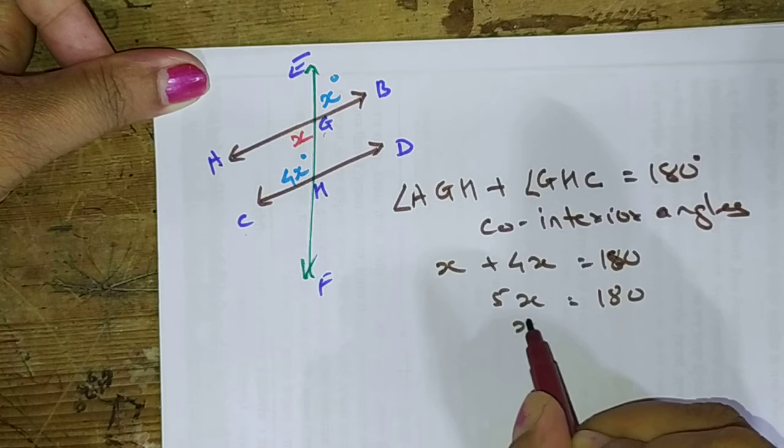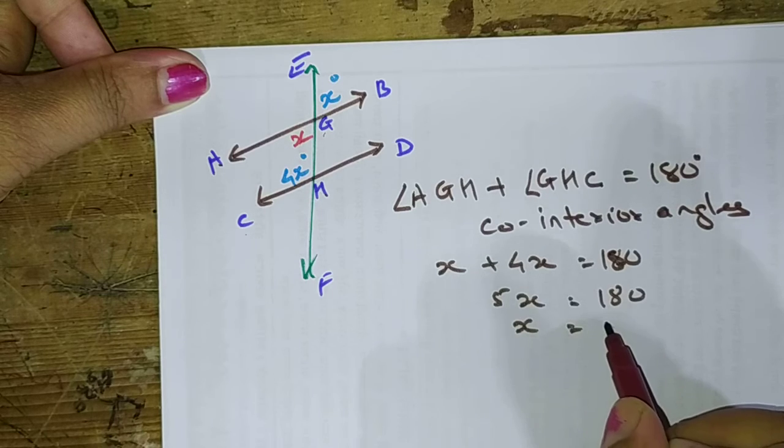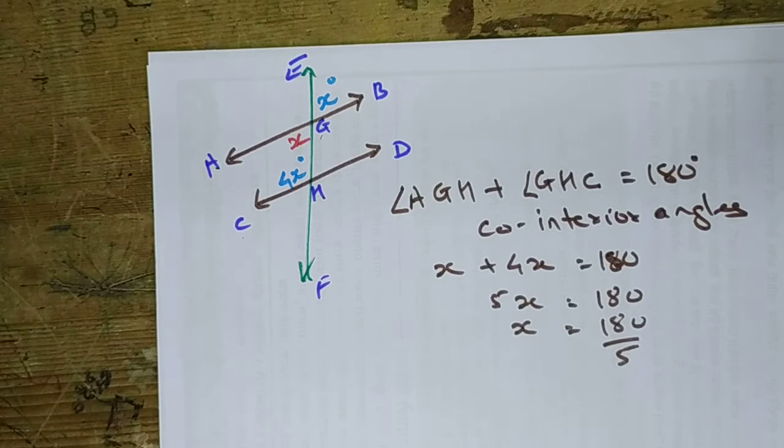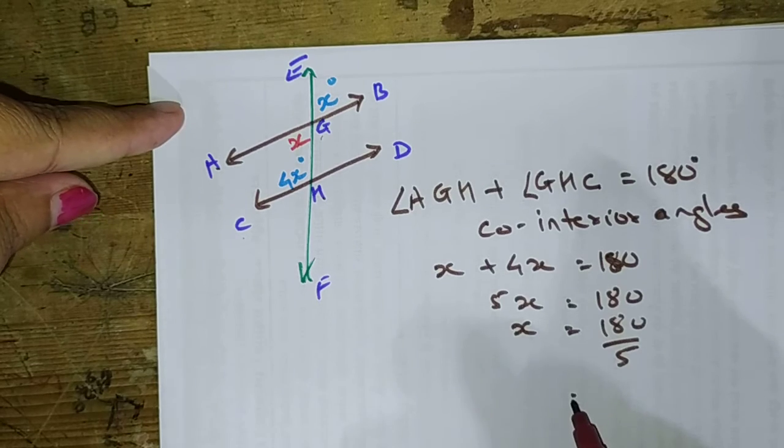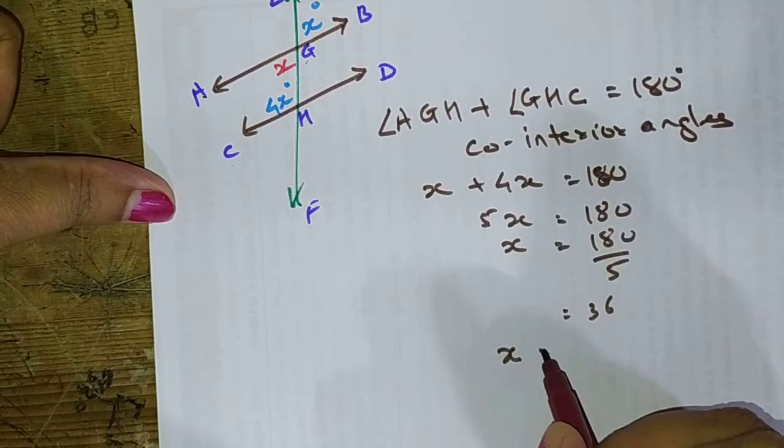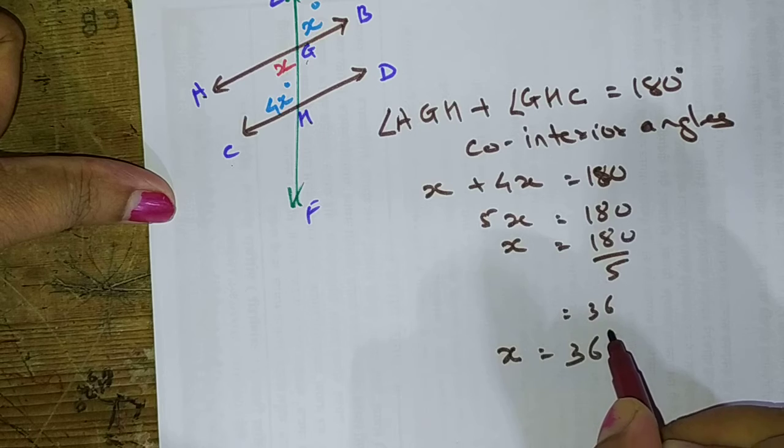So by this we can find out the value of X. X equals 180 divided by 5. When we say 180 divided by 5 we get 36. So here we got the value of X. X equals 36 degrees.